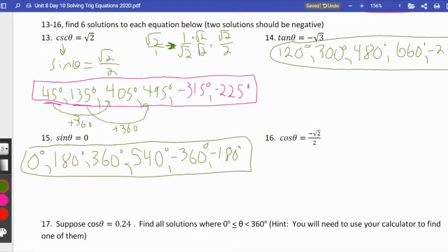When is cosine negative root 2 over 2? Cosine would be left when it's negative, and those are the midpoints. So we're talking about 135 degrees and 225 degrees. Add 360 to 135, and you get 495. Add 360 to 225, and you get 585. Minus 360 from 135, and you get negative 225. And minus 360 from 225, and you get negative 135. Nice.